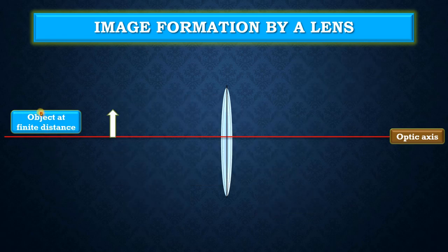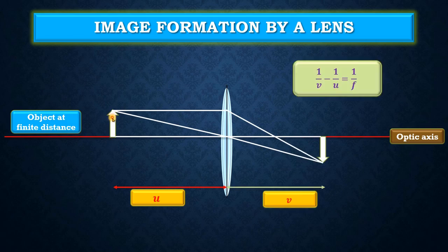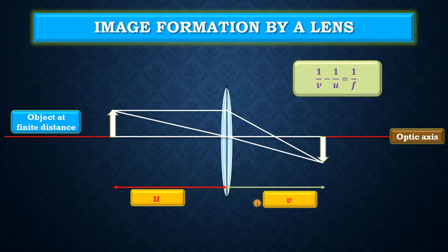Now let us see the second case, when the object is at a finite distance and again the object is white in color. When the light rays starting from this object fall on the convex lens, they form an image at a certain position and the image is inverted in nature. The ray parallel to the optic axis always converges to the focus, and the ray traveling through the optic center never deviates in its direction. Here the object distance is u and the image distance v can be calculated from 1/v − 1/u = 1/f, where f is the focal length of the convex lens.